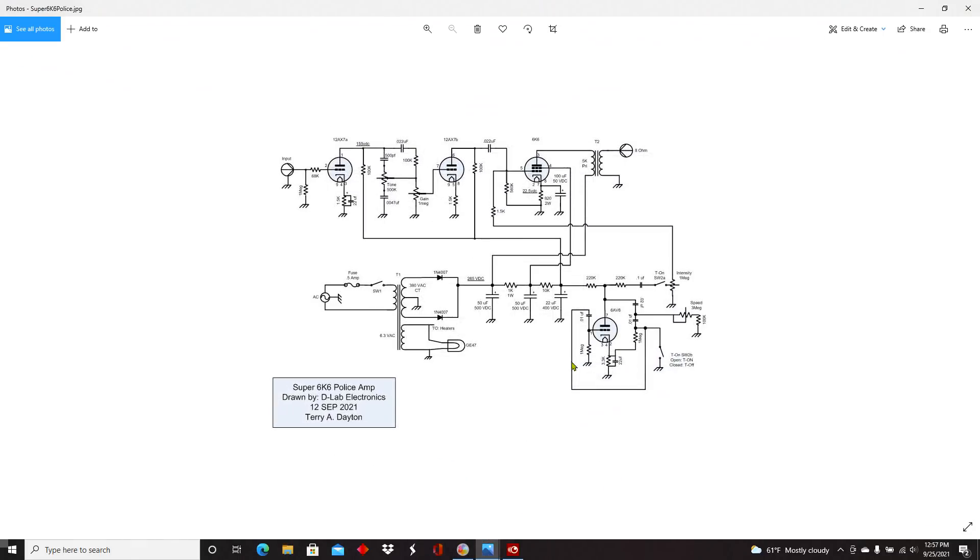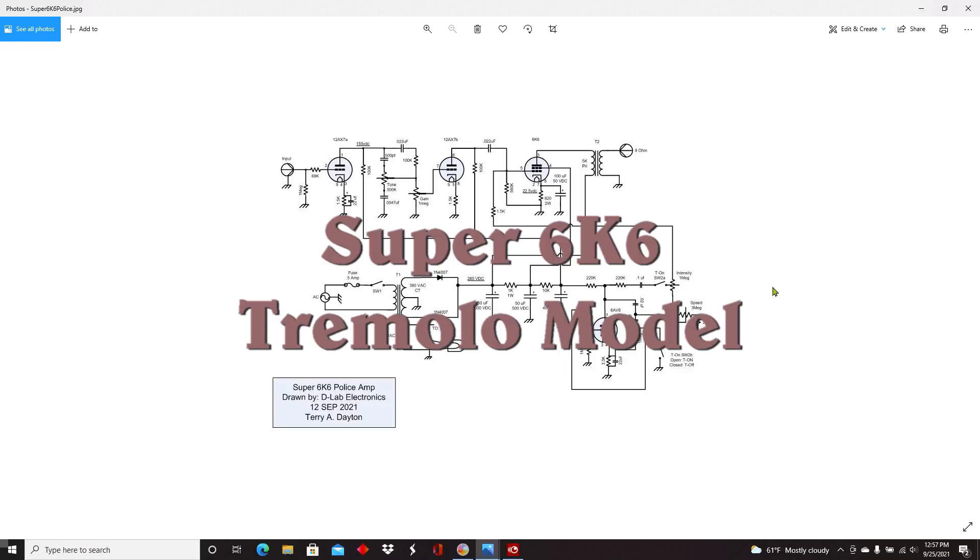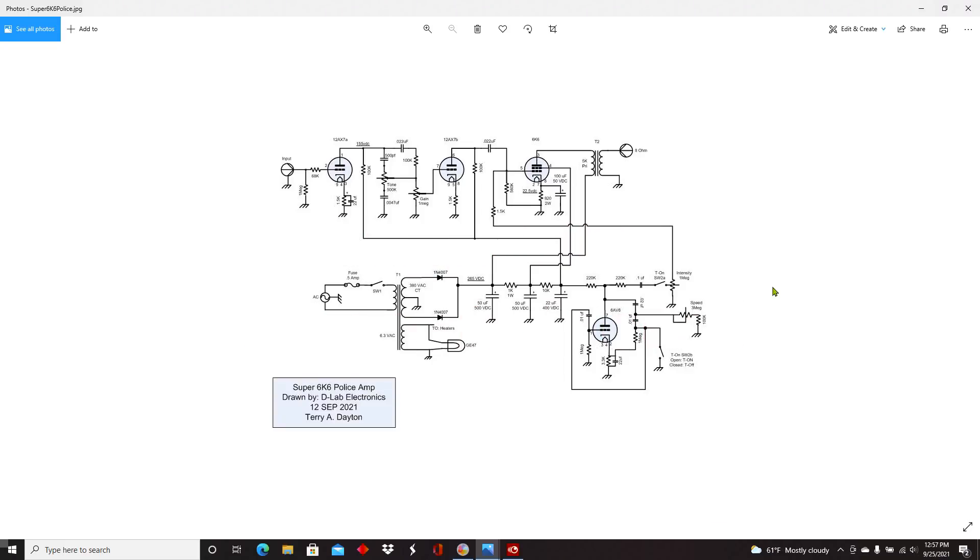And that was to build the super 6K6 police amp which is now up on the screen. If you compare this schematic to the stock 6K6 schematic, you'll see that 90% of it is the same. I ended up using a different police radio, another Lafayette, but in this case it's the model HA520. It's a little bit bigger unit and it actually had four knobs across the front rather than three, which allowed me to add the tremolo pots.